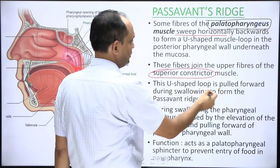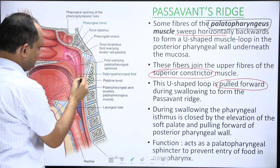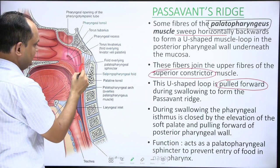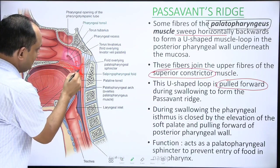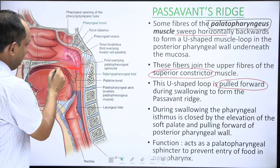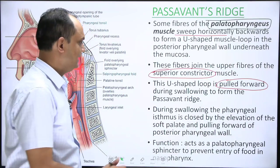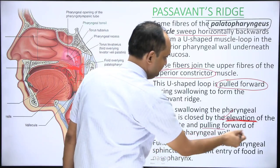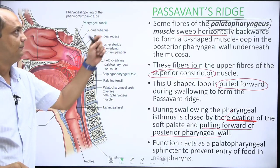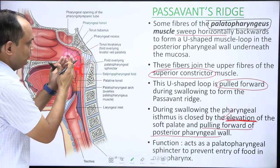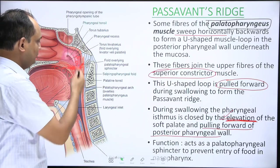During deglutition, this U-shaped loop is pulled forward, producing an elevation in the midline — the Passavant's ridge — while simultaneously the soft palate lifts upward. Both movements meet and close the pharyngeal isthmus, preventing food in the oral cavity from regurgitating into the nasopharynx. The pharyngeal isthmus thus closes by elevation of the soft palate and forward pulling of the posterior pharyngeal wall, and this mechanism acts as a palatopharyngeal sphincter.